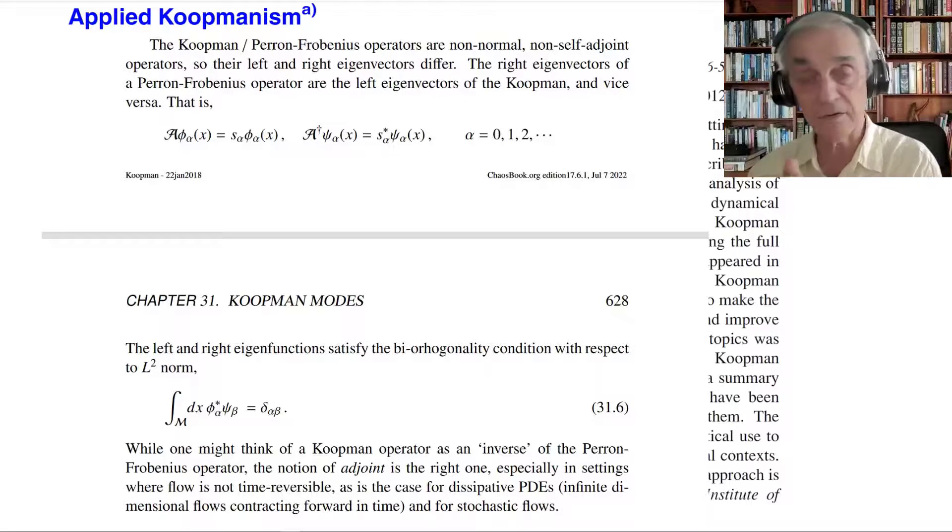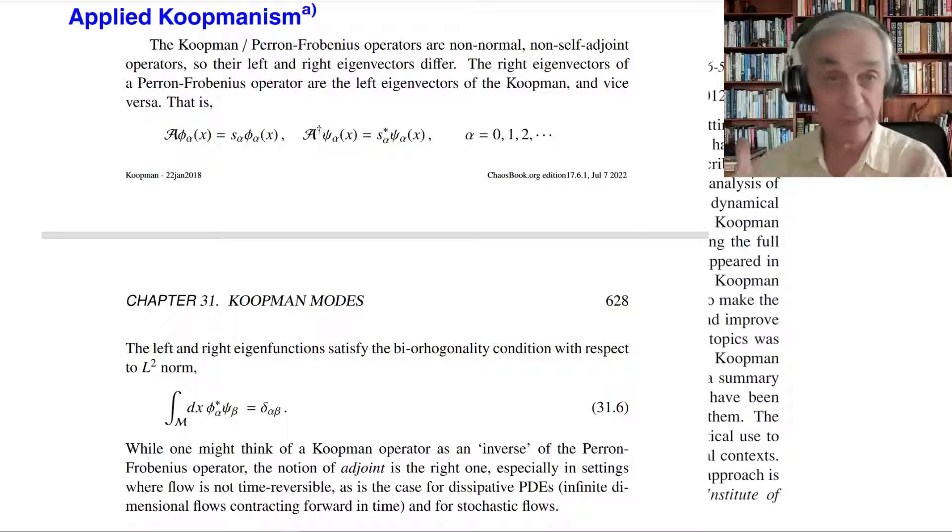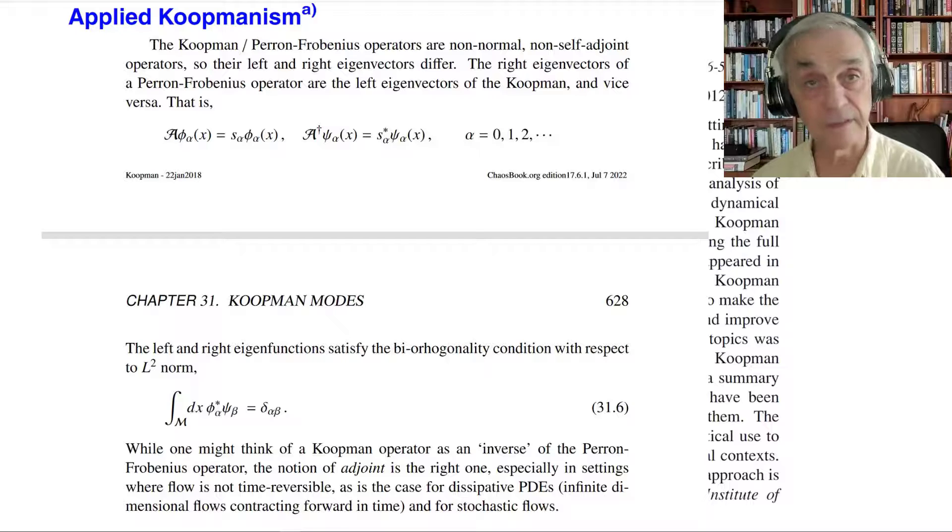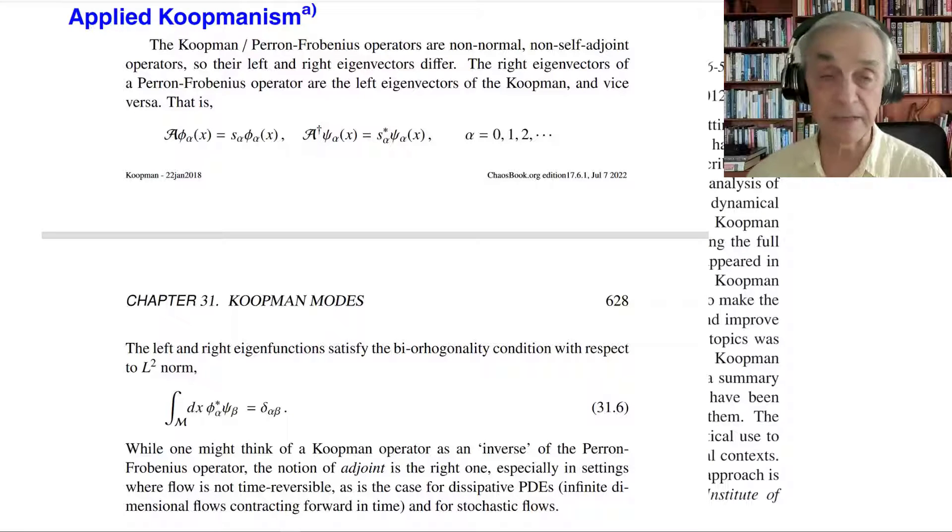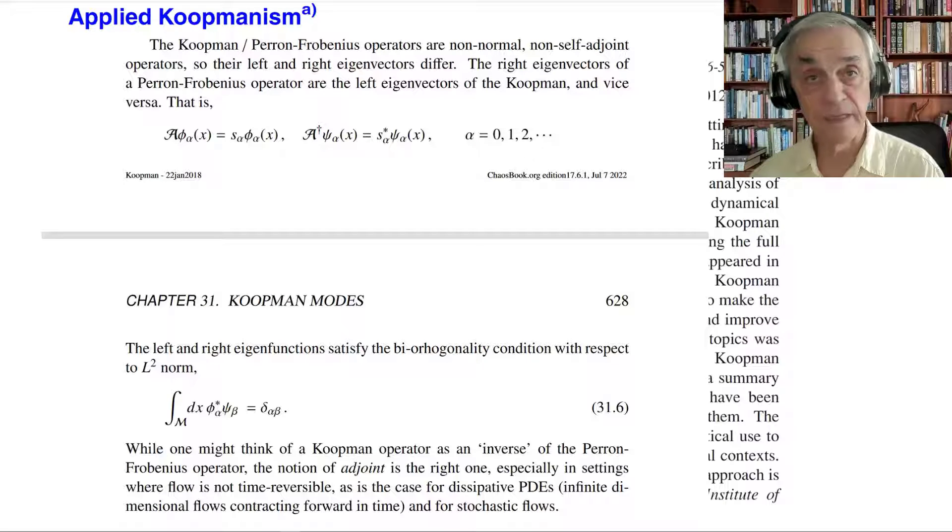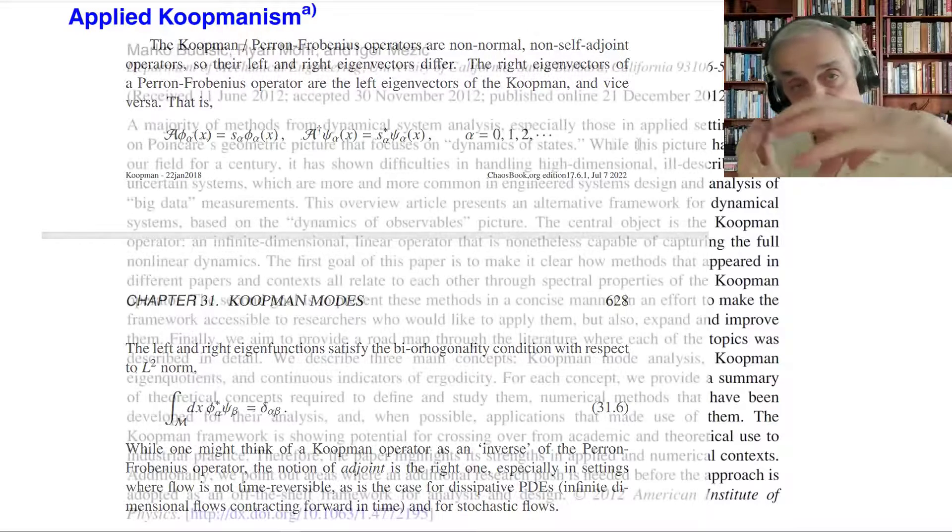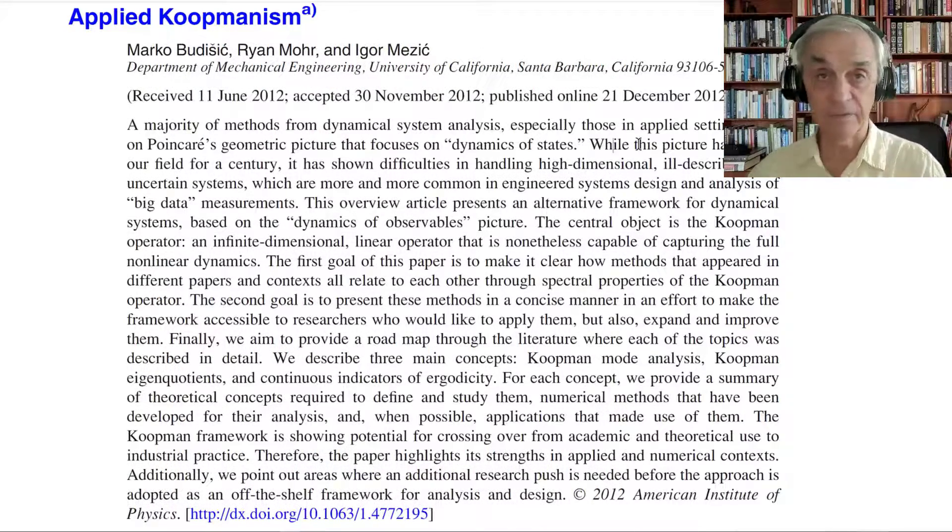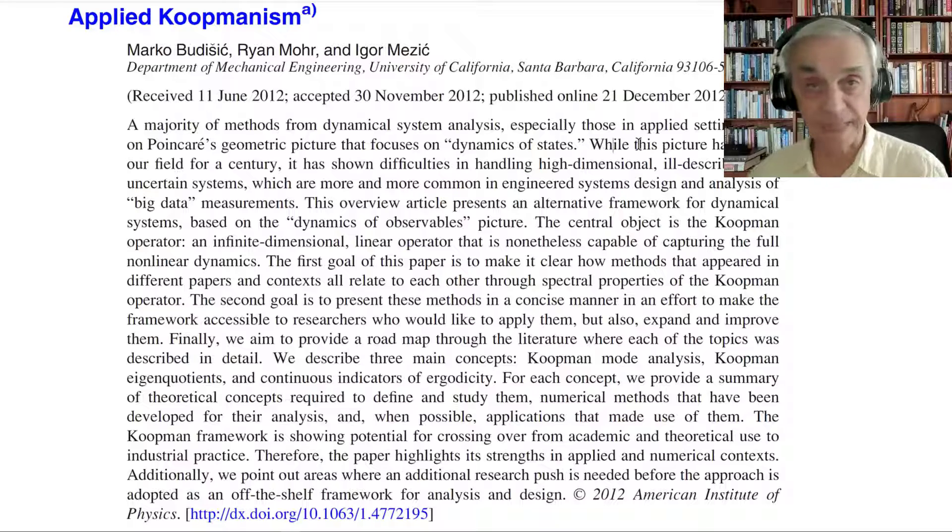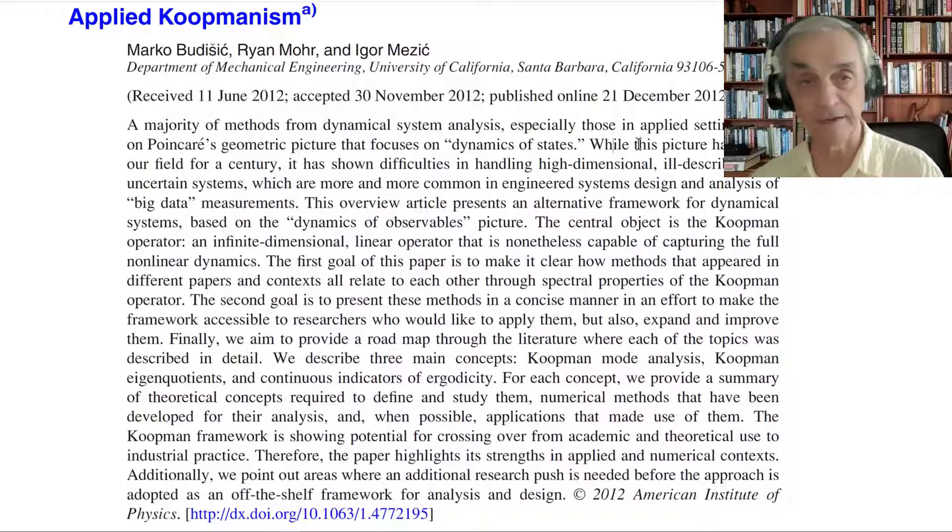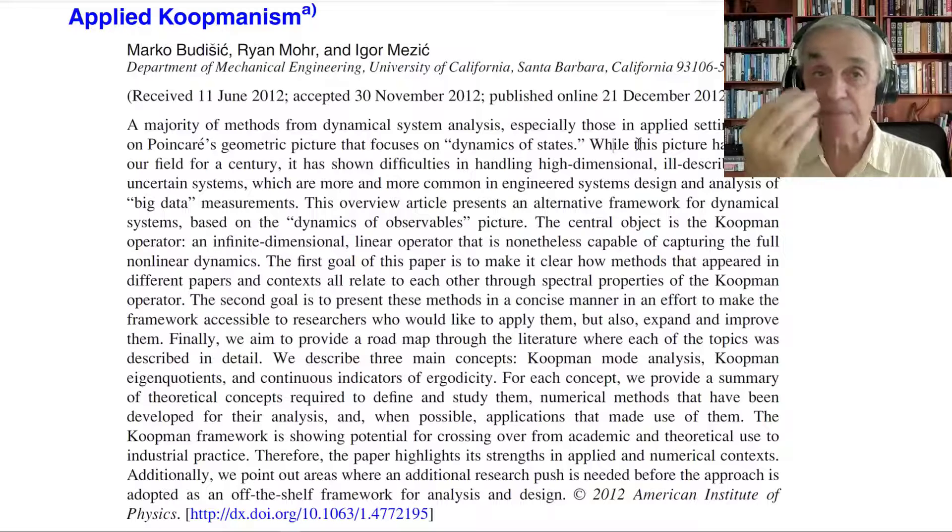Second, whenever you have some symmetry, these spaces can then - because symmetry means the law commutes with symmetry transformations. And what symmetry transformation does is they block diagonalize the space, let's say, into symmetric or anti-symmetric or whatever, or Fourier modes and many other things. So that's what Mezić calls Poincaré-esque.